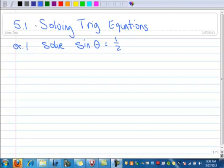I'm going to work three short examples for you from section 5.1, solving trig equations. The first one we want to do is solve this one right here, the sine of theta equals 1 half.